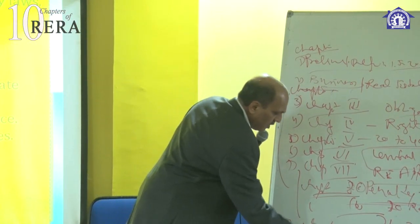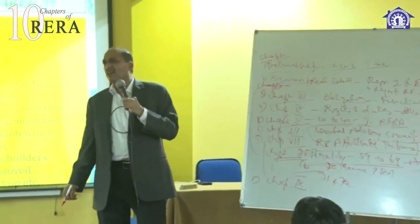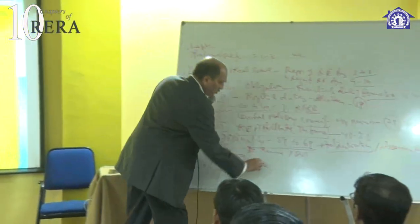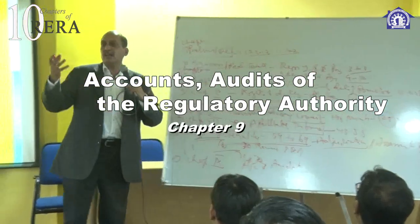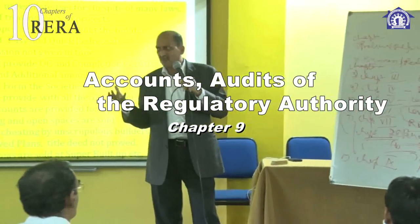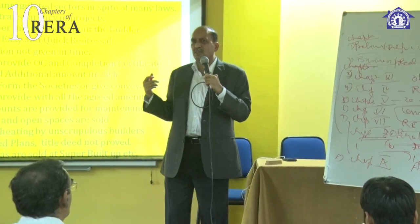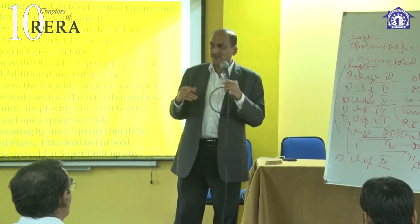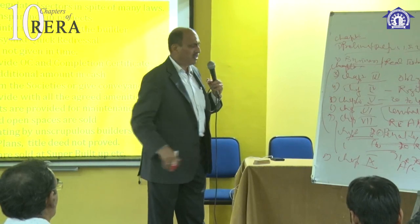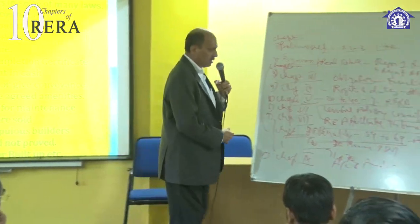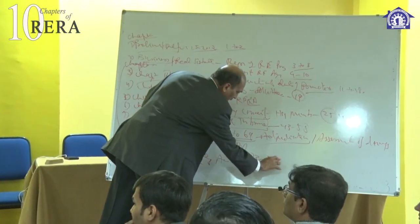Chapter number nine is related to accounts audit of the regulatory authority. The regulatory authority is a separate corporate body of three people that will recover money towards registration fees, penalties, and various other things. Therefore, there must be accounts audit and filing of returns with the government. This covers sections 73 to 78.